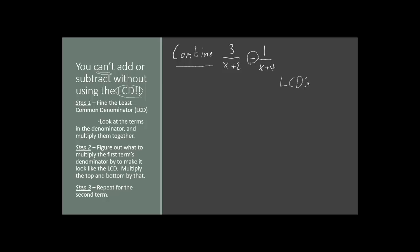To figure out what that is, we look to the denominators of these fractions. We have our first term, (x plus 2), and our second term, (x plus 4). The LCD is just going to be those two terms multiplied together: (x plus 2) times (x plus 4). Our goal is to make both of our fractions have this denominator, so these denominators will have to change.